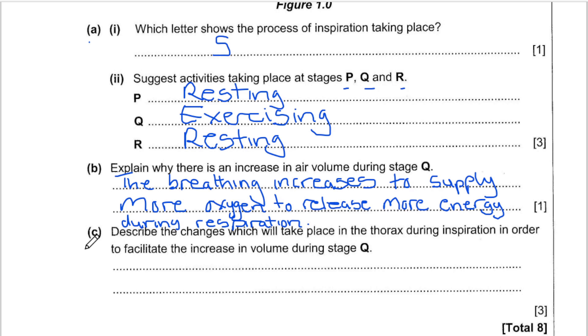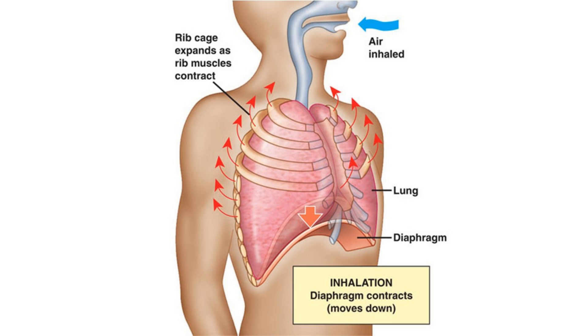Describe the changes which take place in the thorax during respiration in order to facilitate the increase in volume during stage Q. During exercising, what will actually happen here is that the volume of the chest will actually increase due to contraction of the external intercostal muscles, which will then increase the ribcage upwards and outwards, and the volume of the chest will then increase.